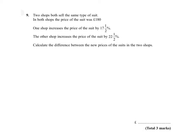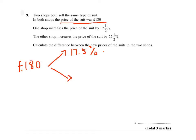Question 9. The price of the suit was £180. One shop increases it by 17.5% and another shop increases the price of the suit by 22.5%. What we are asked to work out is the difference between the new prices of the suits in the two shops.